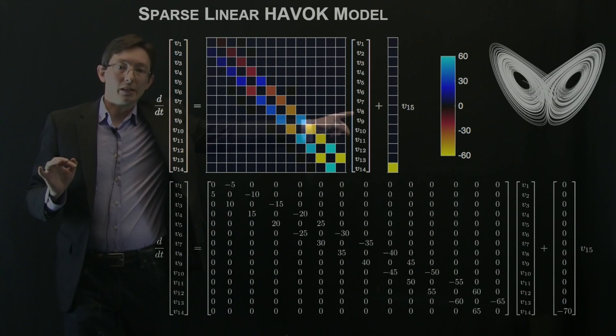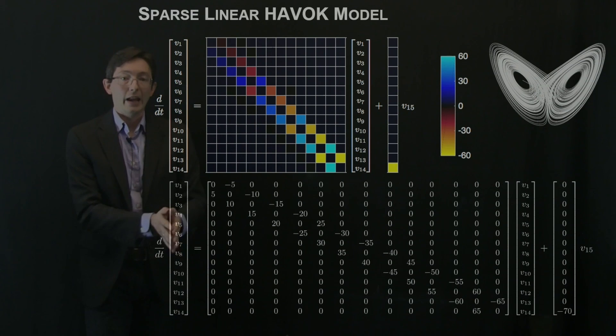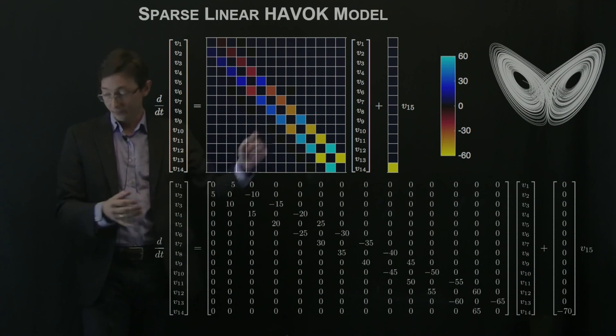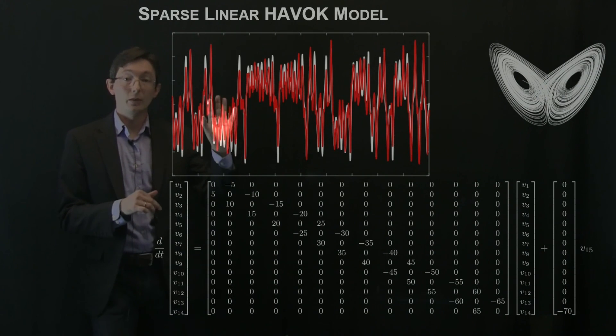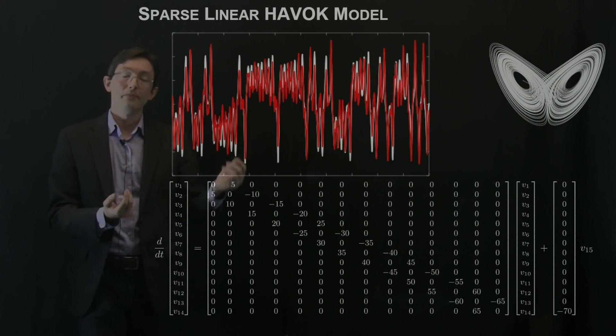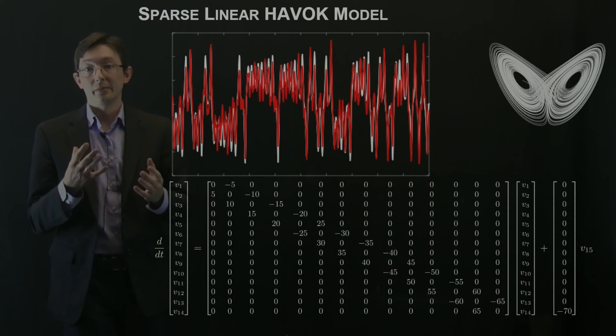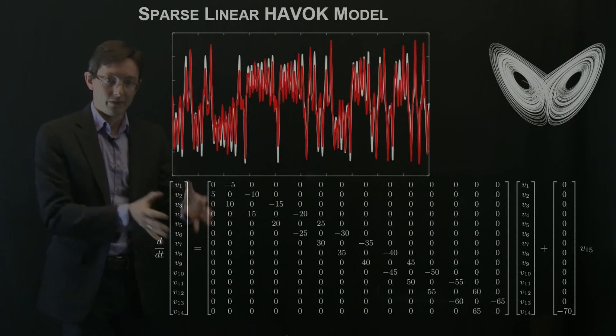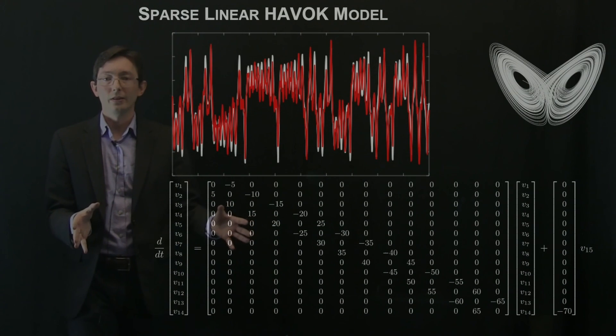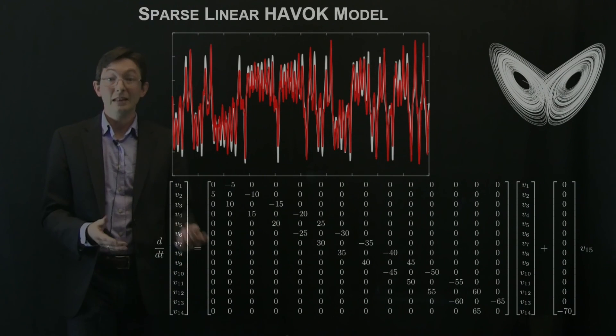What I do is I take that forcing signal, V15, measured from the real Lorenz system and I force this neighboring system with that input, and this is the result. In white, you have the real Lorenz system and in red, you have this neighboring integer valued system with the same Lorenz forcing. And this is, for me, kind of mind-blowing.